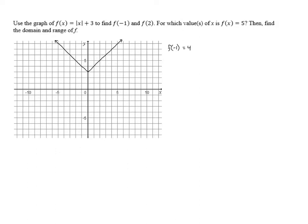Similarly, we can find f of 2 by looking at 2 on the x-axis and moving up to see what the y-coordinate is of the point that has an x-coordinate of 2. In this case, the y-coordinate is 5, so we know that f of 2 equals 5.